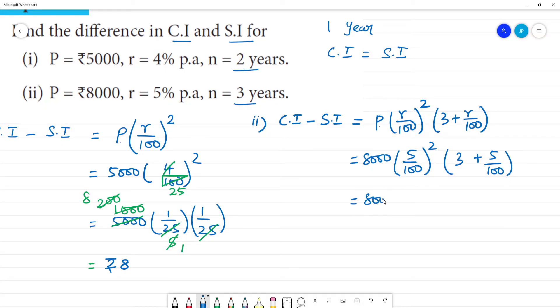So 8,000 5 by 100 is 1 by 20, 20. So here it is 1 by 20 the whole square, 1 by 20, 1 by 20. So 3 plus 1 by 20. This is 8,000, 1 by 20 multiplied by 1 by 20, 2 times. 3 plus 1 by 20.